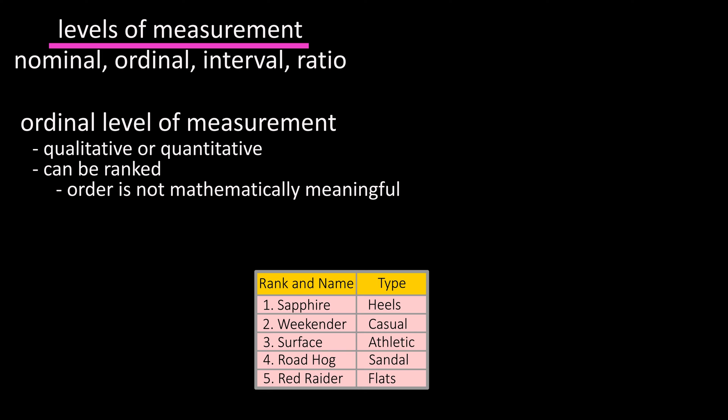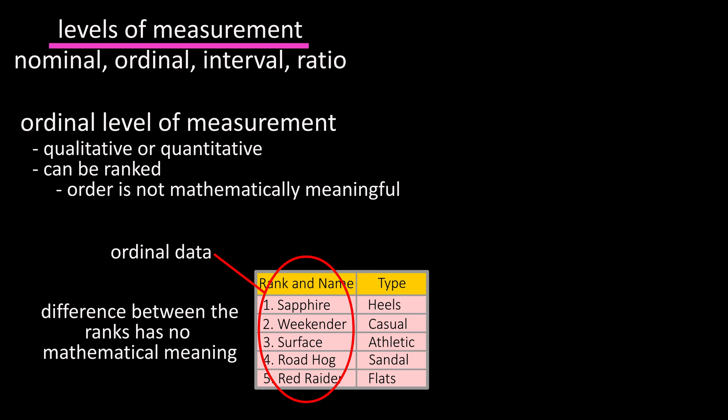Ordinal levels of measurement are qualitative or quantitative, as they can be ranked or arranged in order, but the numbers are not meaningful. Going back to the shoe sales example, the first data set on the left is at the ordinal level because they can be ranked in order. However, there is no mathematical meaning between the ranks, as the difference between the number two rank shoe and the number four rank shoe has no mathematical meaning.